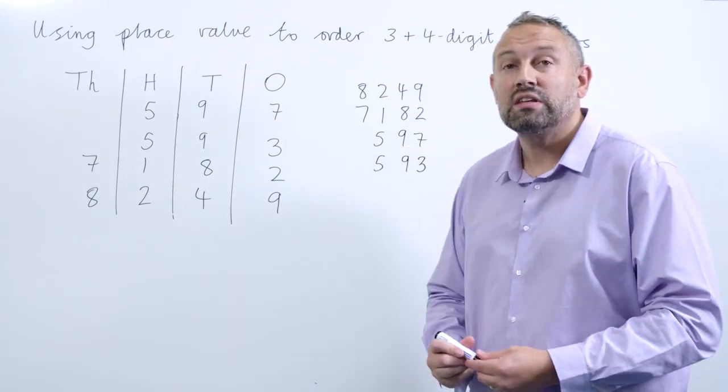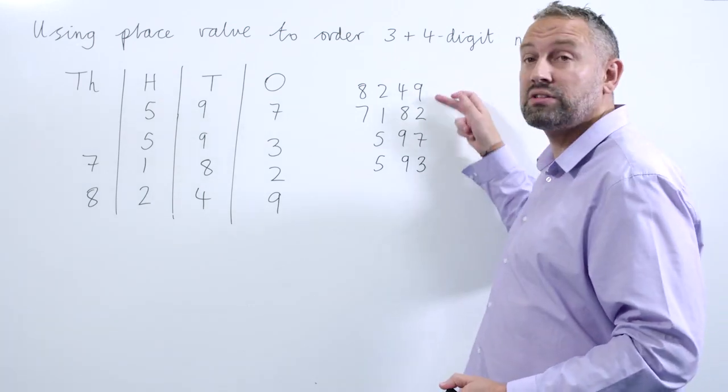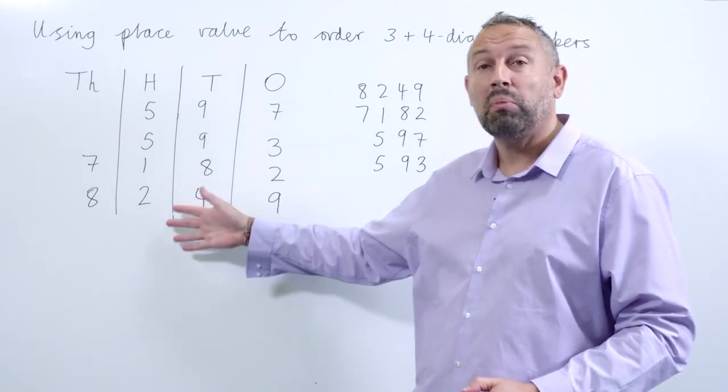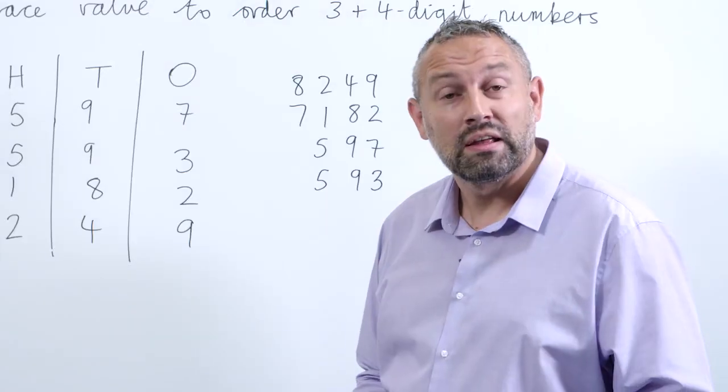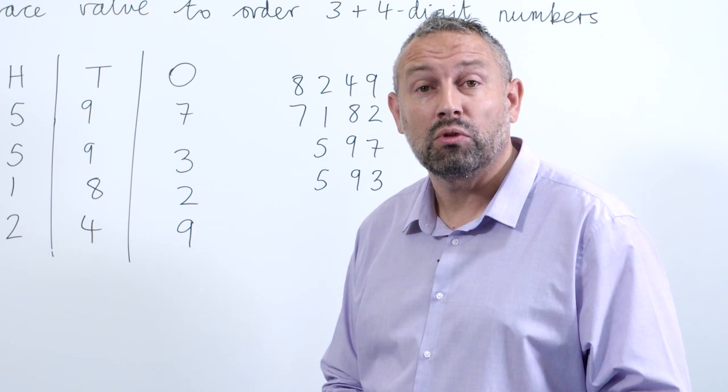So here you can see the four numbers in descending order from the largest to the smallest, using the place value column to really understand the value of each digit.